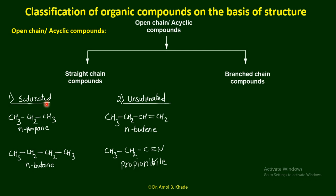For example, CH3-CH2-CH3 has three carbons — this is N-propane. Similarly, four carbon atoms linked with hydrogen gives the structure of N-butane. These structures have a straight chain with no branching and no double or triple bonds, so they are straight chain saturated compounds. Because they lack double or triple bonds, they are referred to as saturated straight chain compounds.